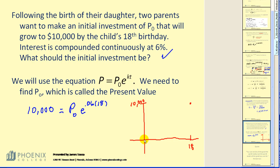And at time zero, the question is what should the initial investment be so that if it grows exponentially after 18 years, we'll end up with $10,000.